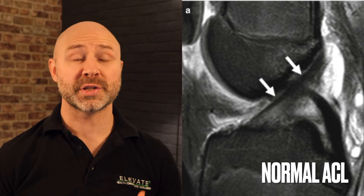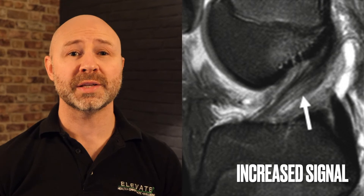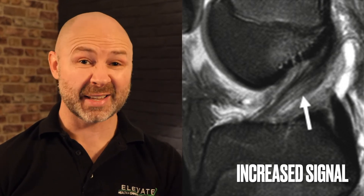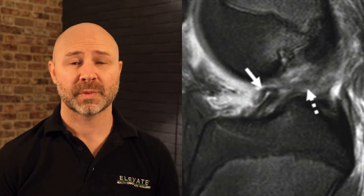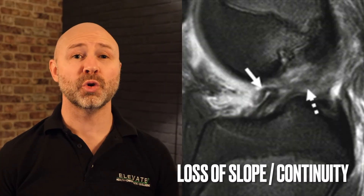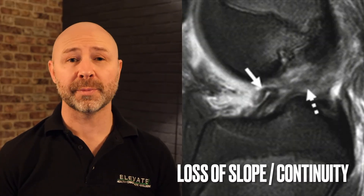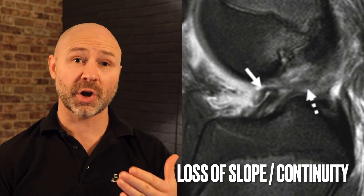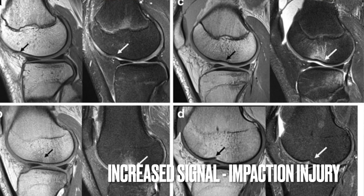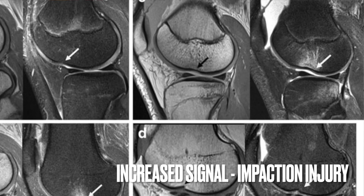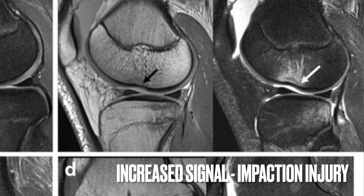Common MRI signs of an ACL injury include increased signal within the substance of the ACL on T2-weighted images. There could also be a loss of the normal slope and character of the ligament, especially on sagittal (side-on) images. You might also see increased signal within the lateral femoral condyle and the posterior tibia as a result of an impaction injury. MRI is also good at showing up injuries to the meniscus, chondral surfaces, and the other knee ligaments.